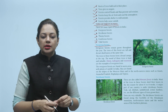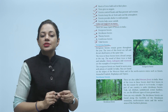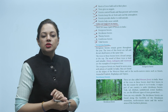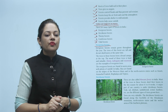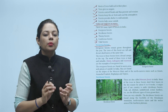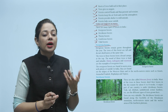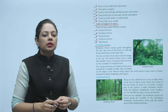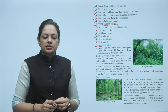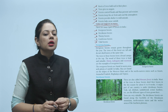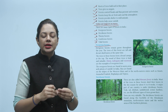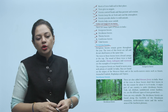Ebony, Mahogany and Rosewood are examples of evergreen trees. The evergreen forests are found in warm areas with plenty of rainfall in India — on the slopes of the Western Ghats and in the northeastern states such as Assam, Arunachal Pradesh, Meghalaya and Tripura.